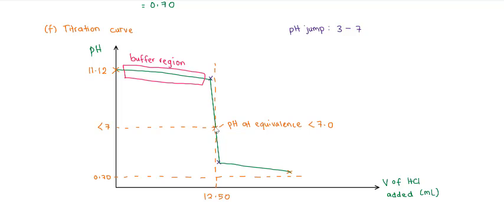At equivalence, since our salt is acidic, the pH at equivalence is less than 7. For the final pH, we already calculated the pH of the titrant. Remember it won't reach 0.7 because our solution is diluted. The pH jump for weak base and strong acid titration is around 3 to 7. That's it, thank you for watching.